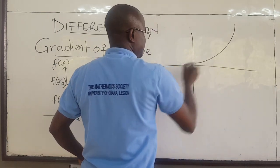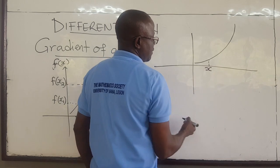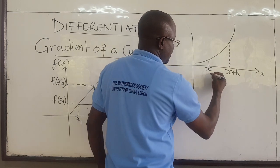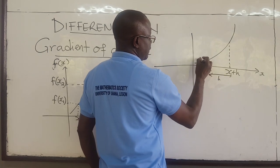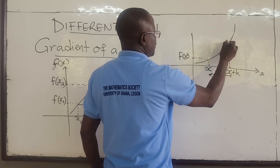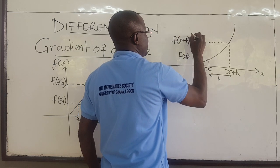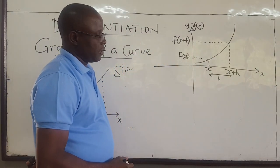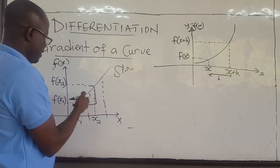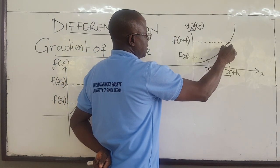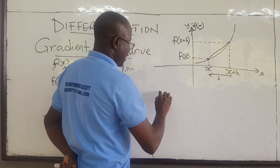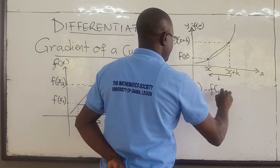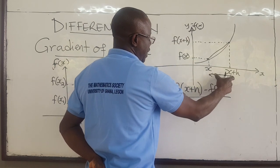Let this be the curve. If I take a point here, let's call it x, suppose I move a distance h away and pick another point — let's say x plus h. So the distance from here to there is h. Then the value here will be f of x, and the value of the function at the second point will be f of x plus h. From what we just learned, the slope of the line connecting these two points would be: the rise f(x+h) minus f(x), all over x plus h minus x, which equals h.